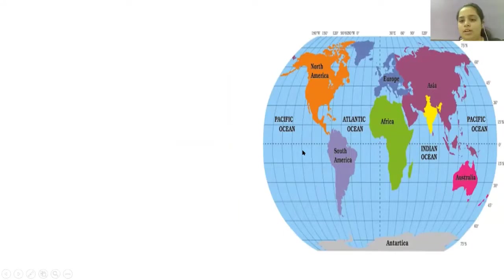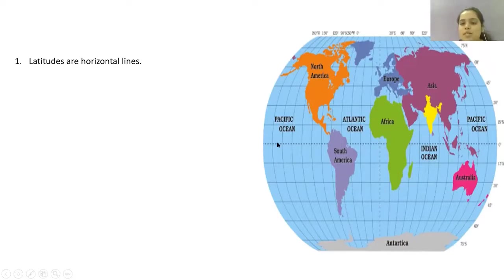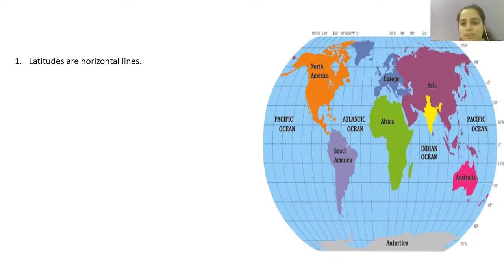Indian Ocean and Pacific Ocean. Now let us study the latitudes and longitudes. Latitudes are horizontal lines — you can see here the zero degree latitude, the dotted line, the sleeping line. Your zero degree, which divides the whole world into two equal halves, is called the equator. The equator, that is zero degree latitude, divides the world into two equal halves. The countries or continents which are to the north of the equator